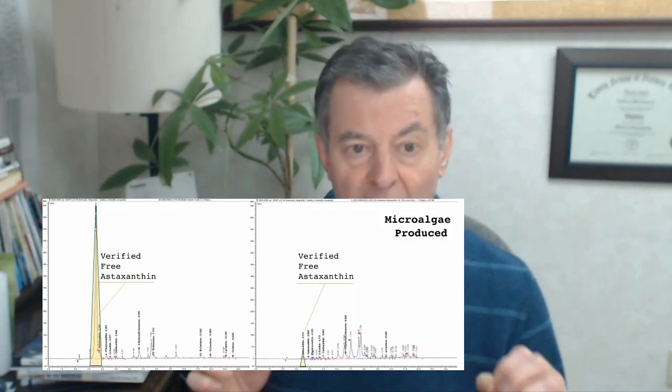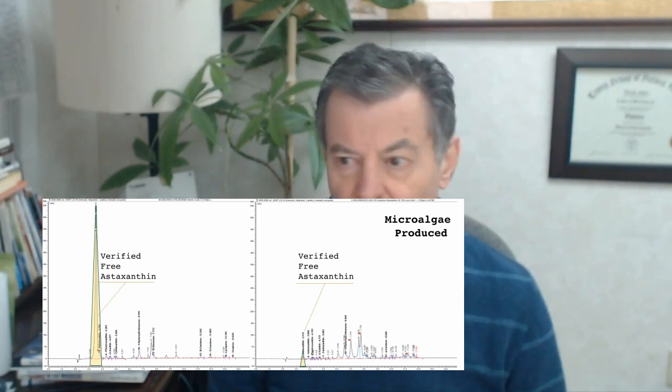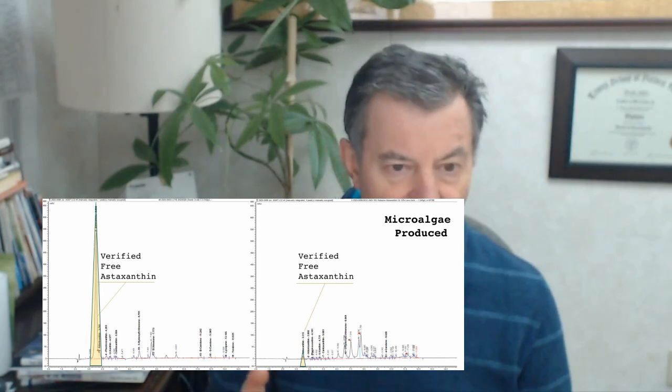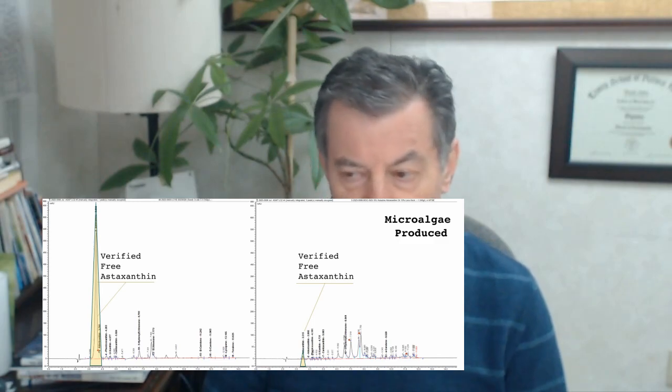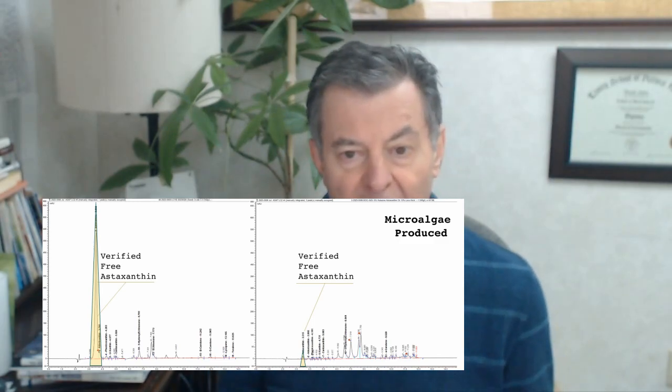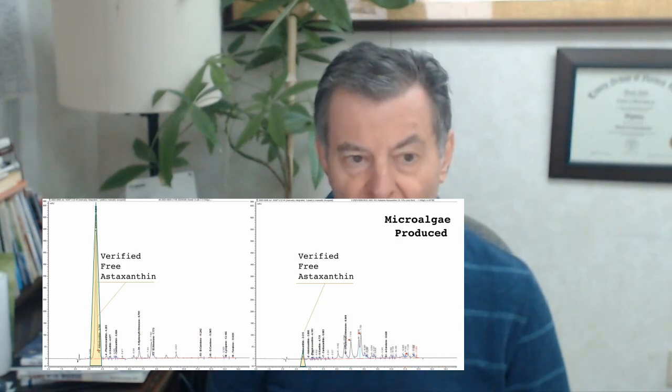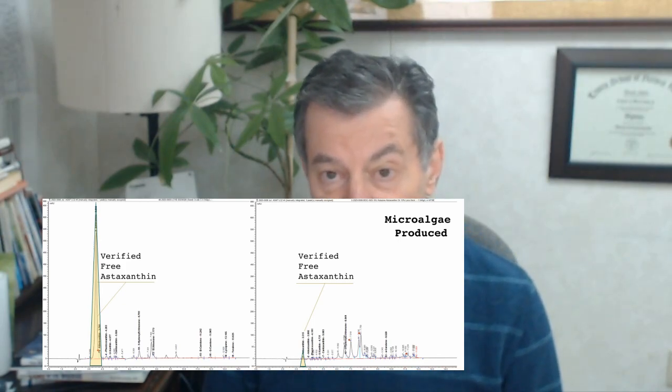Astaxanthin is great for so many things: your eyes, your skin, your immune system, your heart, your cardiovascular health — you name it, and there's almost nothing that astaxanthin isn't great for. It can really improve your health tremendously, because it's the king of all carotenoids. Carotenoids are pigments — like carrots, which get their name from the word carotene, carotenoid. Now we're able to produce pure astaxanthin itself through a fermented process using yeast — it's kind of a secret process.